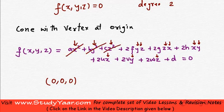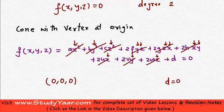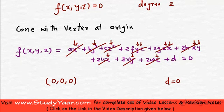When you replace x, y, z with 0, 0, 0, every term becomes 0, and you are left with d = 0. So one thing we know for a cone having a vertex at the origin is that it does not have a constant term. Let's find out if we know something else.